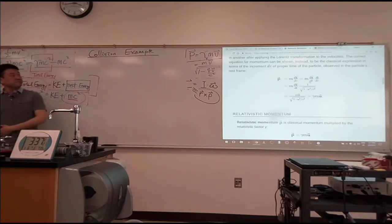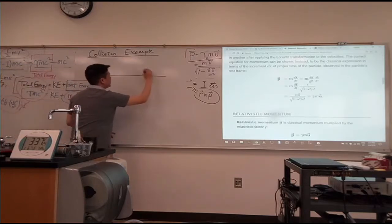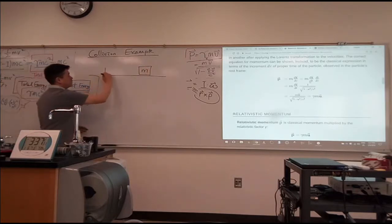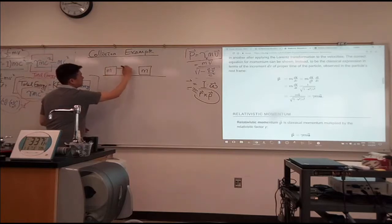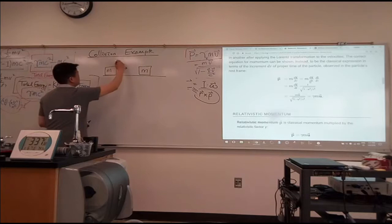So you have a flat plane. You have a block of mass M. You have another block of same mass M that's coming in at speed of 0.9C.